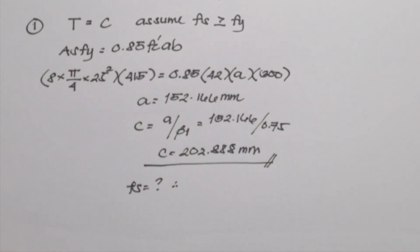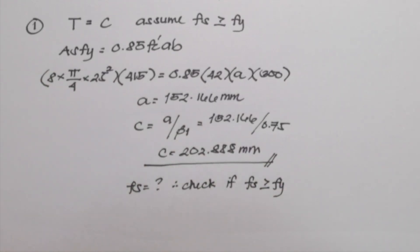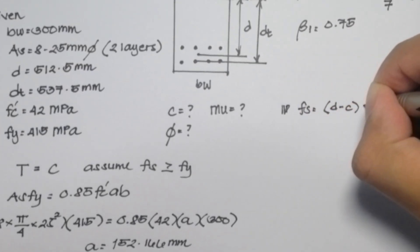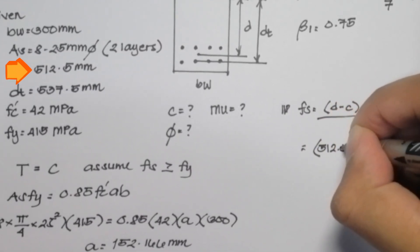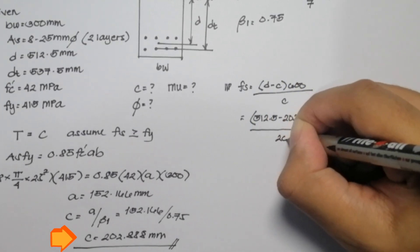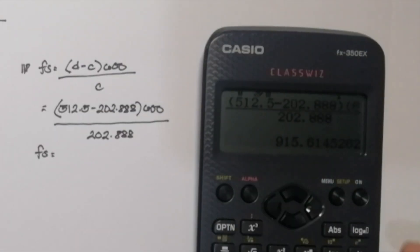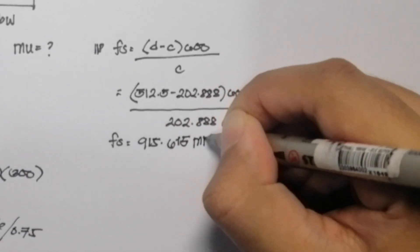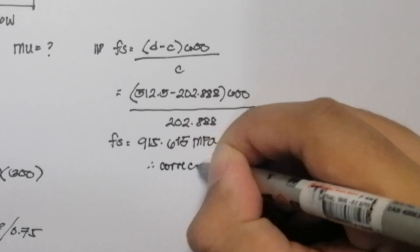Next is solving for Fs or the theoretical stress in the steel. We need to check if our assumption is correct if Fs is greater than or equal to Fy or not. Solving for Fs, we can use the formula D minus C all multiplied by 600 divided by C. Substituting our values D as 512.5 minus C, 202.888 multiplied by 600 divided by 202.888. Fs is equal to 915.6 MPa, and it is obviously greater than Fy, so our assumption is correct that Fs is greater than Fy or the yield point of the steel.